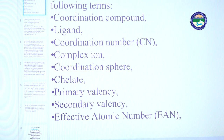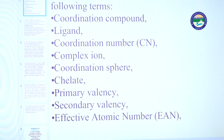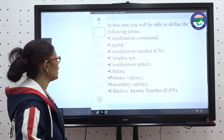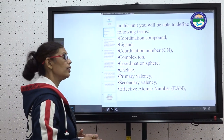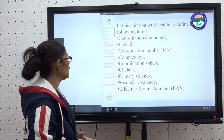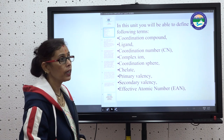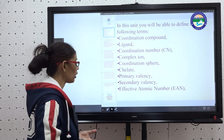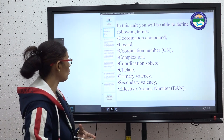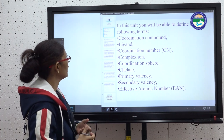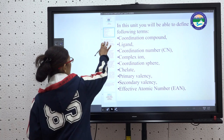Number 4 is Complex Ion — what we call a complex ion. Next is Coordination Sphere — what is coordination sphere in coordination chemistry. Then Chelates, Primary Valency, Secondary Valency, and Effective Atomic Number (EAN). These are coming in examinations — how to calculate ligands, coordination number, and coordination spheres. So basically, you will study these topics.